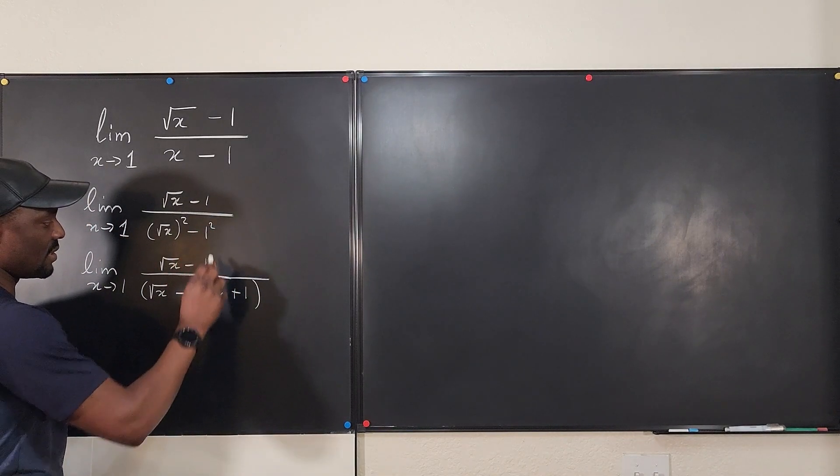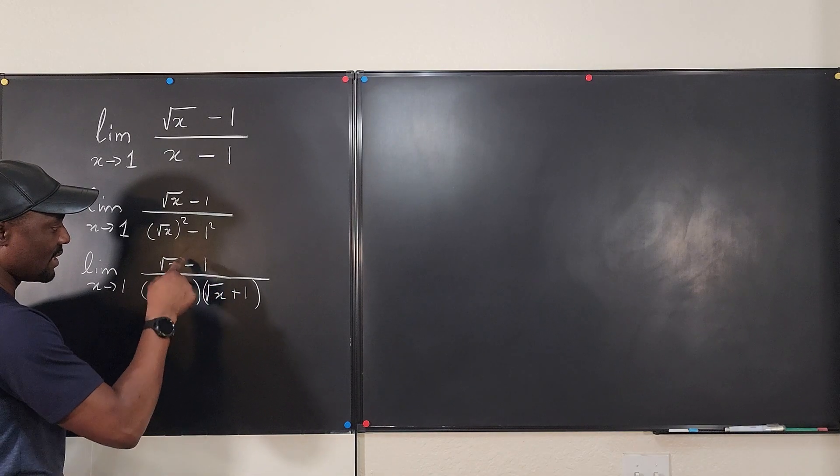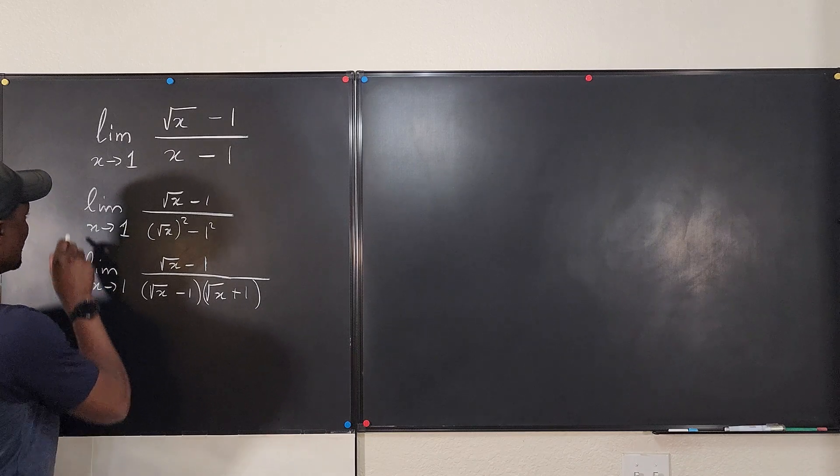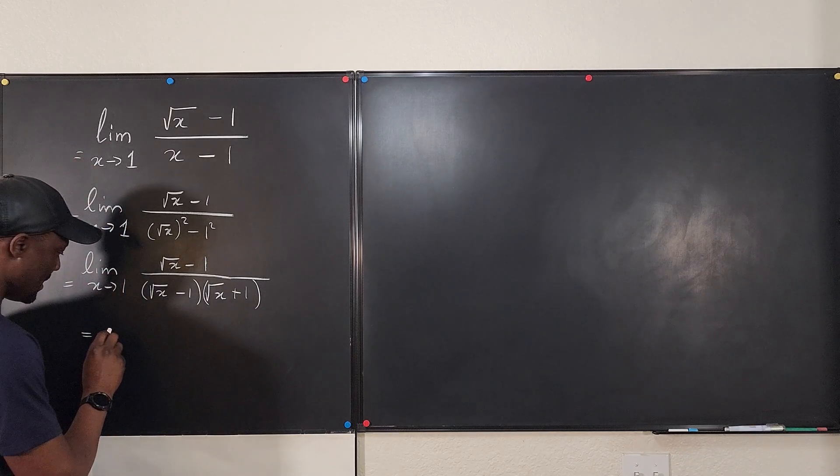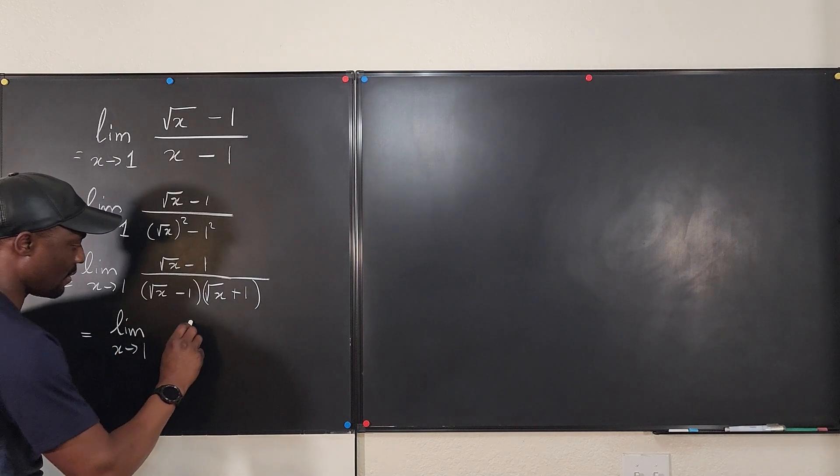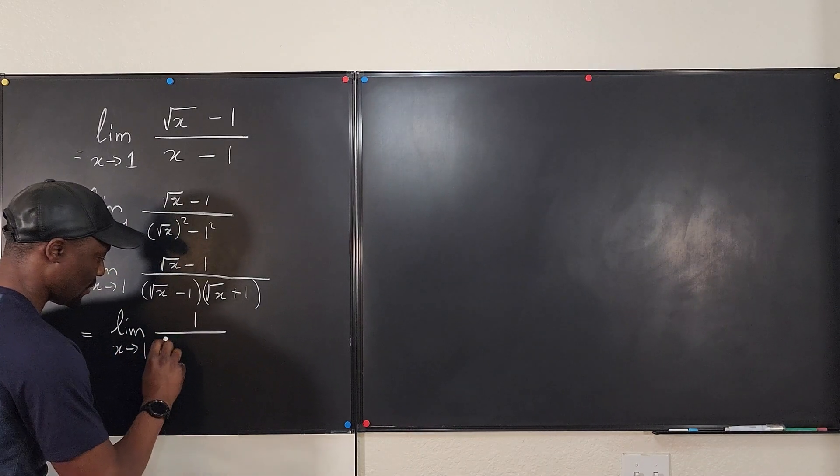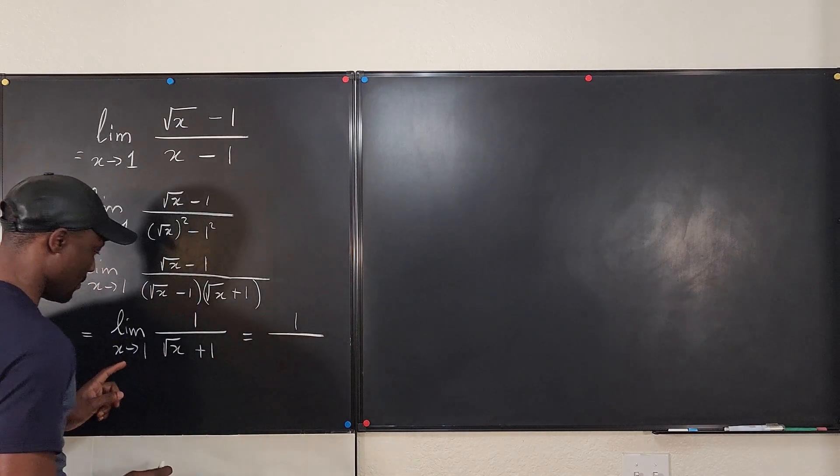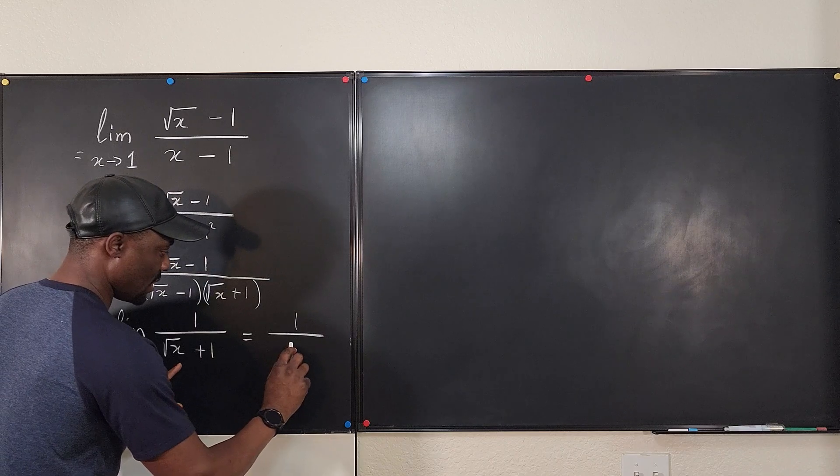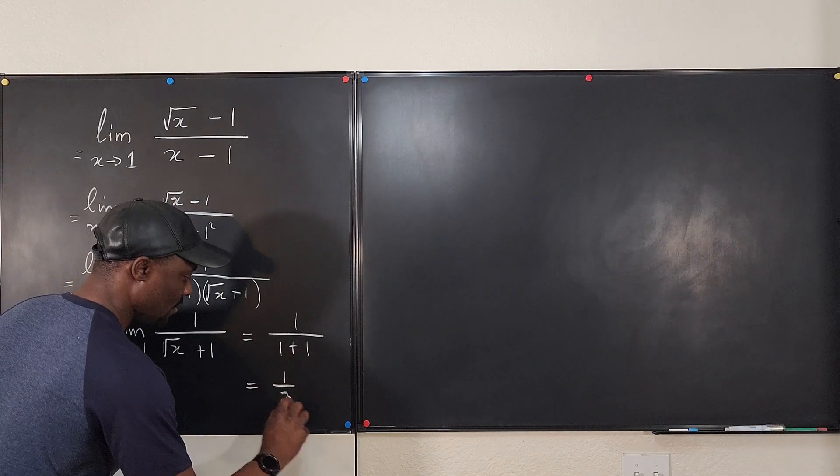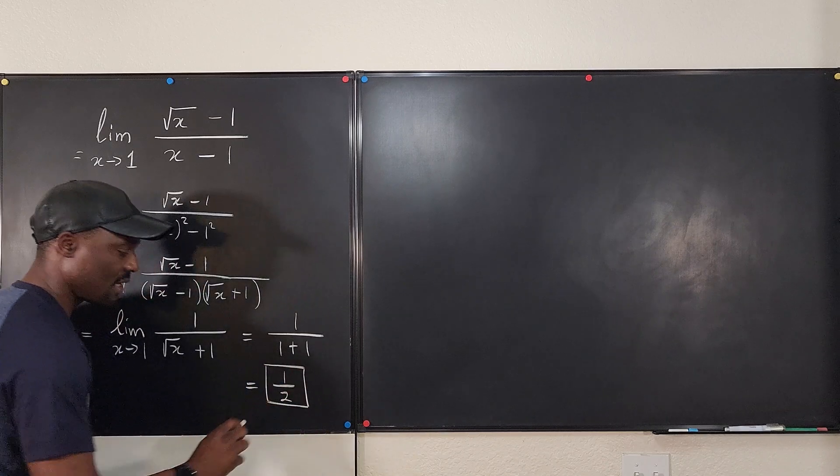See, this is 1 squared. And now this can cancel this out so that my answer will be equal to the limit as x goes to 1 of just 1 over square root of x plus 1. And that gives me 1. If I plug in 1 here over 1 plus 1, which is equal to 1 over 2. So this limit is 1 half.